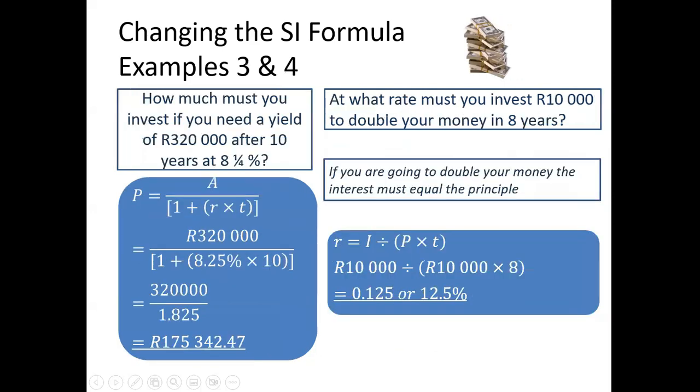Two more examples. How much must you invest if you need a yield of $320,000 after 10 years at 8.25%? Now, this is that one where you are given the future value, you are looking for the principle, there is no interest amount given, and now A comes in, kicks I to the ground, turns it into a one that we add to RT. Then we simply replace the values. Now I've done that here, everything is given, and we get our answer there, and in this case it's R175,342.47.